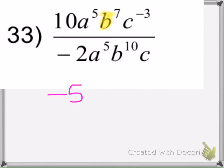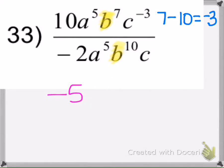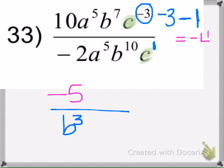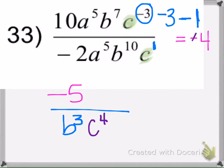We have common b bases, so we subtract: top minus bottom, 7 minus 10 is negative 3. Since it has a negative exponent, b to the negative 3 moves to the denominator. Then for the c terms we have common bases: negative 3 minus 1 is negative 4. So c to the negative 4 also moves to the denominator, and when we move it there the negative goes away.